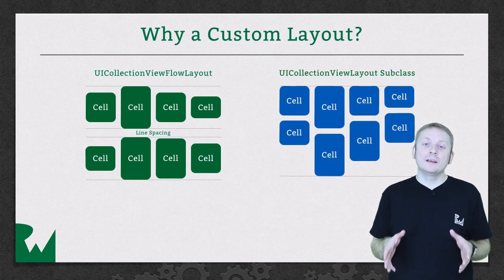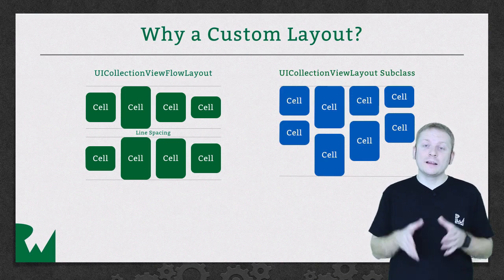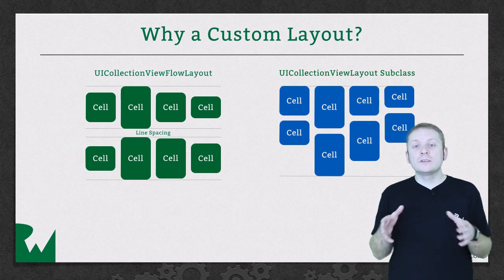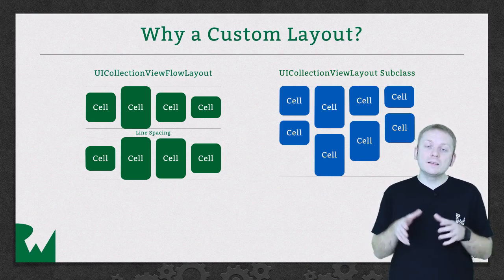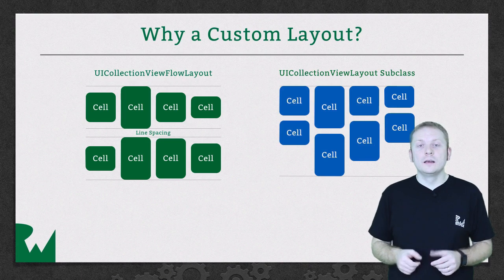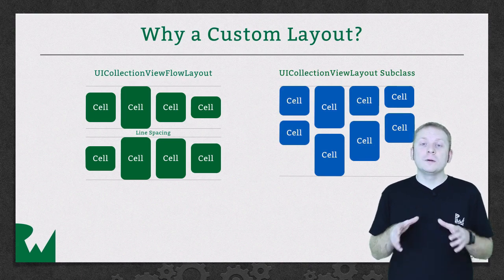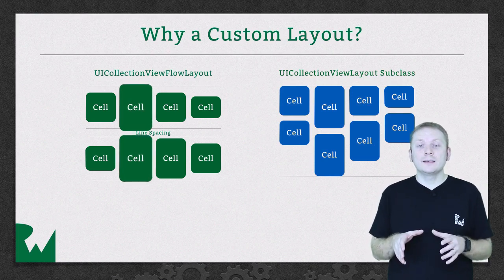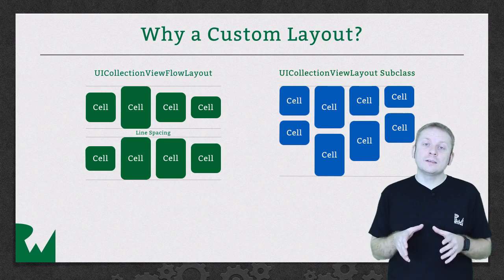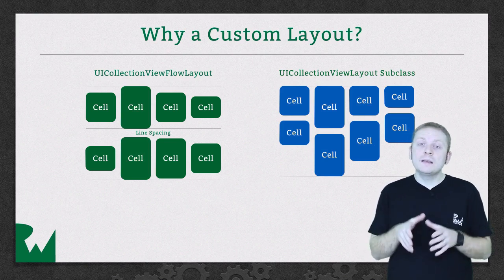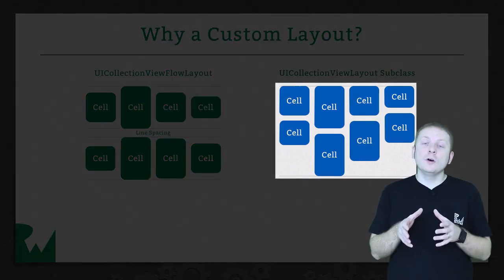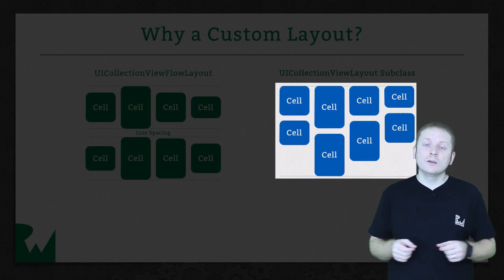Now, you might be wondering why, since UICollectionViewFlowLayout has built-in support for cells of different sizes, we're choosing to use UICollectionViewLayout. The answer to that is twofold. First, the flow layout adopts the concept of rows, and therefore bases the height of each row on the tallest cell in that row, and lays out the shorter cells by vertically centering them. In order to achieve the Pinterest layout, we want all our cells in each column to be bunched up and laid out independently of cells in the other columns.